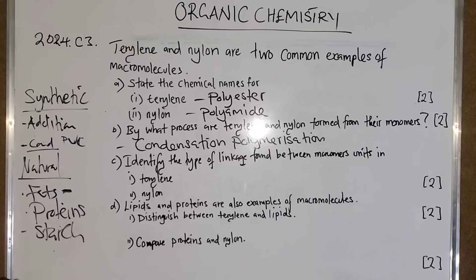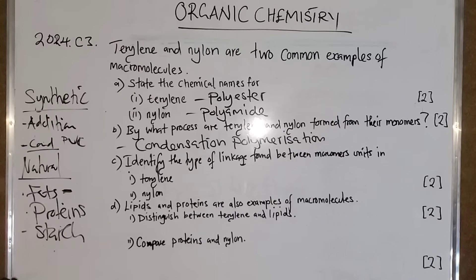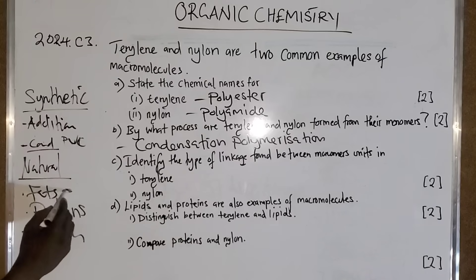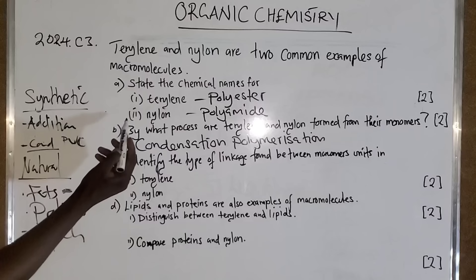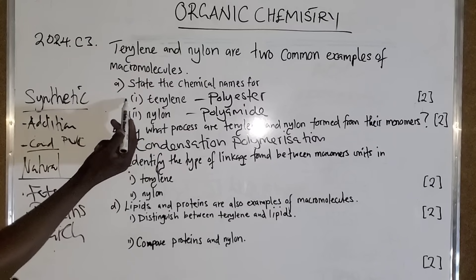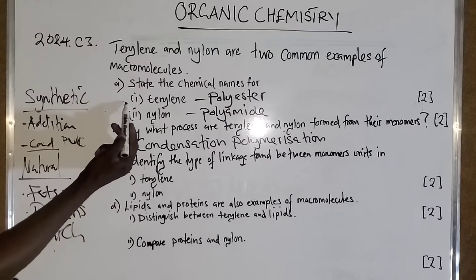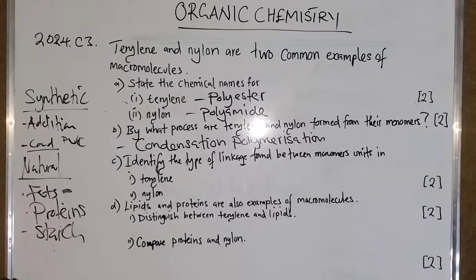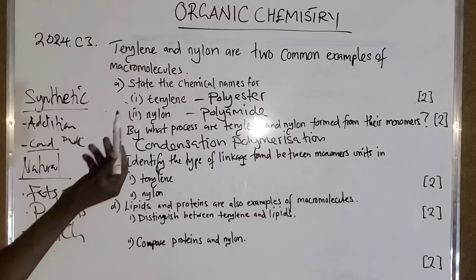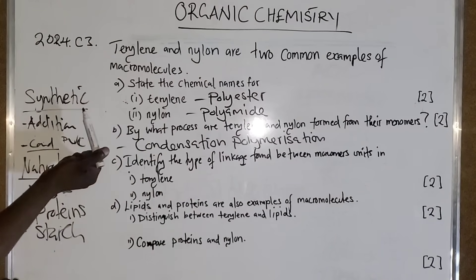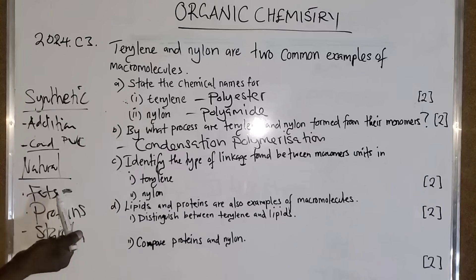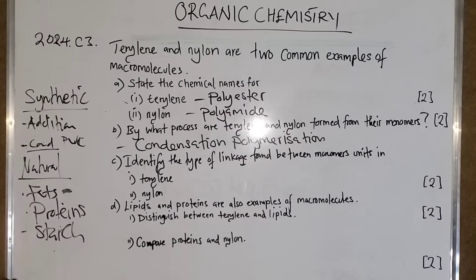Fats or lipids have an ester linkage. So when asked for a similarity between fats or lipids and terylene, you can say both have an ester linkage. The difference is that terylene is a synthetic polymer while fats are a natural polymer.